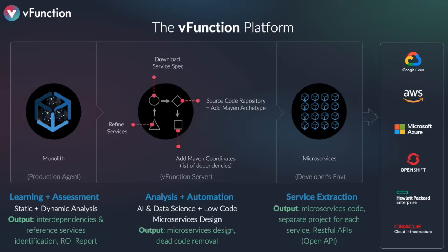As vFunction builds this model, it creates a set of reference services and reference architecture, illustrated through a studio to the architect in phase two. The architect applies their rules — using AI, data science, and a low-code approach to design microservices where you can combine, split, and extract services. Phase three is where source code is actually used to create a new project that you can containerize and move to a cloud native environment: AWS, Google Cloud, Azure, HPE, OpenShift, OCI, etc.